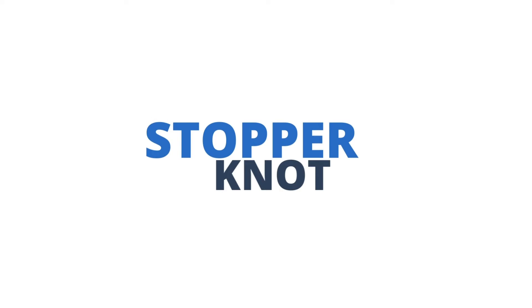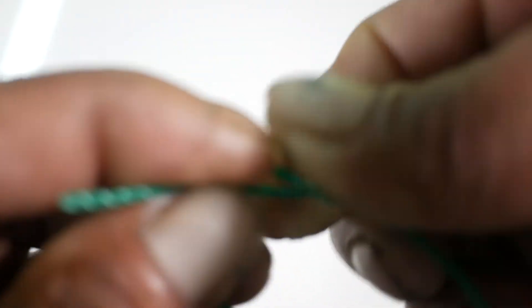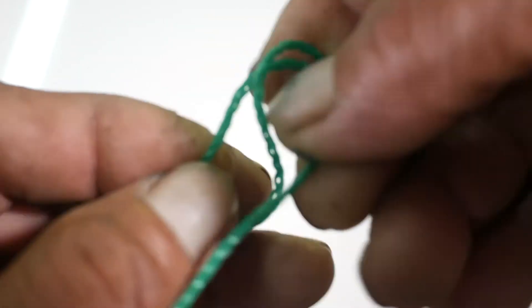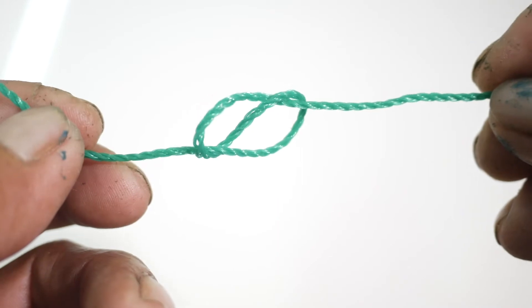Stopper knots are generally used to prevent the end of a rope from unraveling. First is the overhand knot. This is the simplest knot and considered the foundation of all fishing knots. The figure of 8 knot is called that way because of the form it resembles. This knot is used to fasten a twine to a hook and tighten.